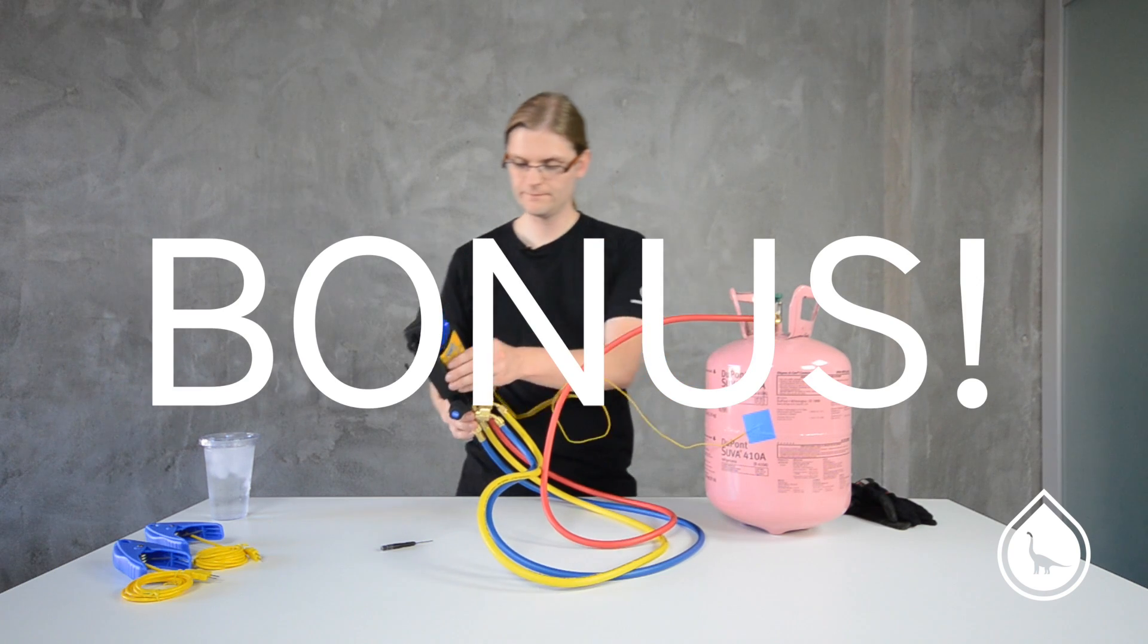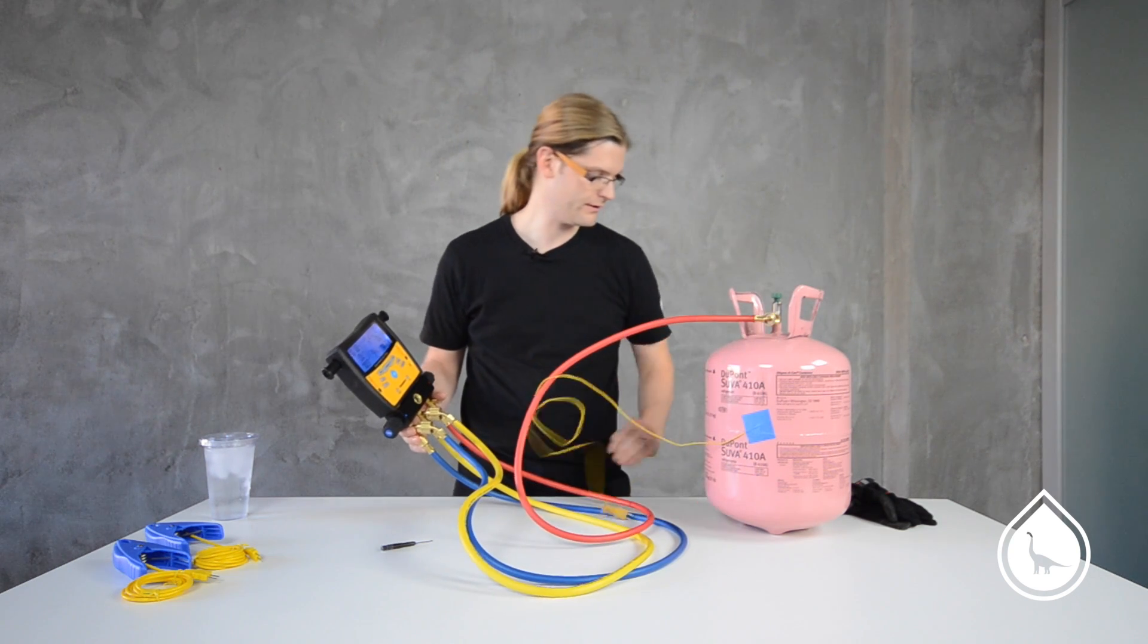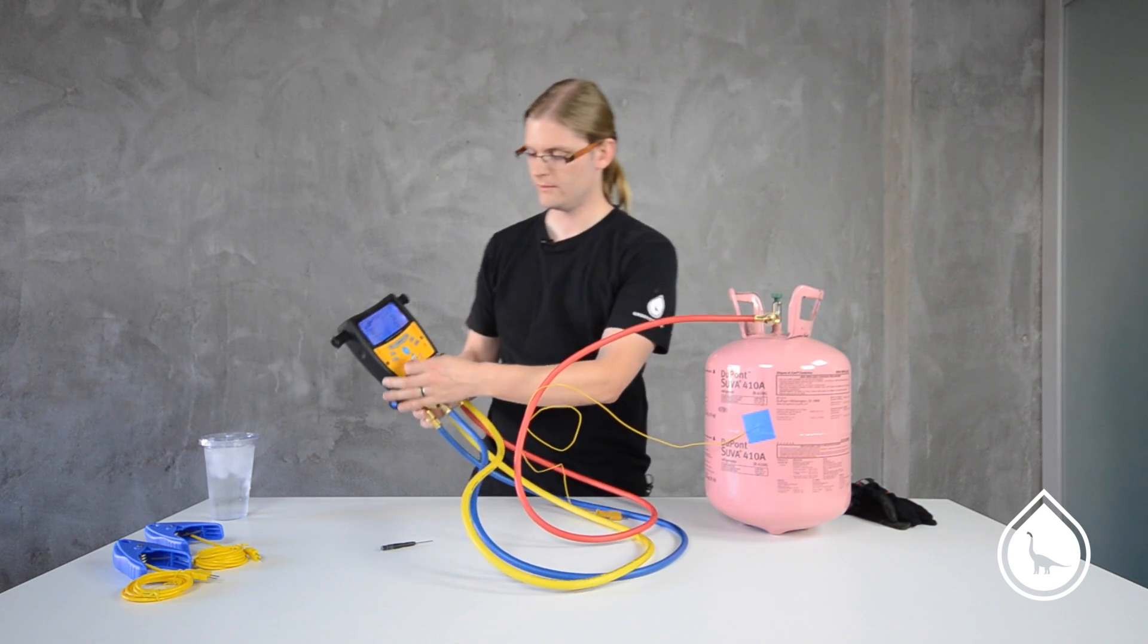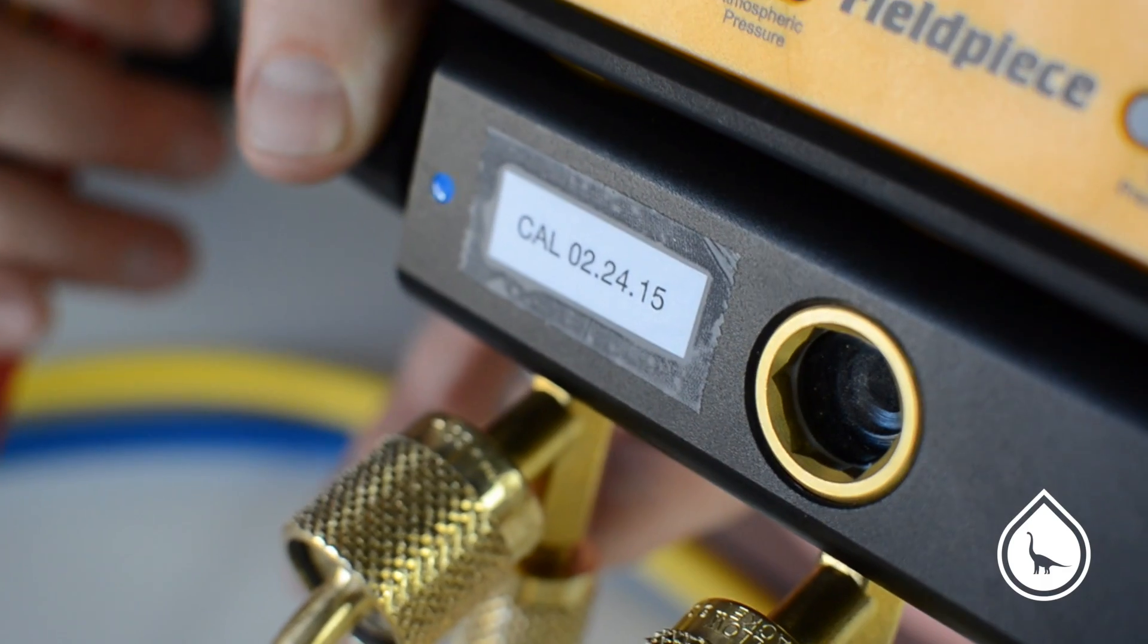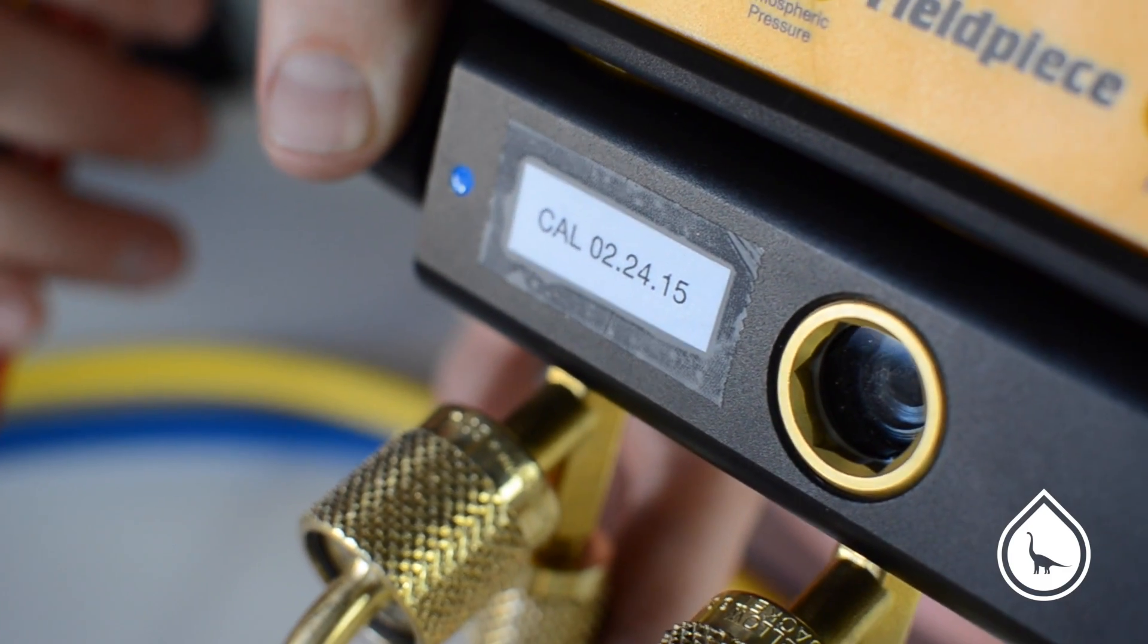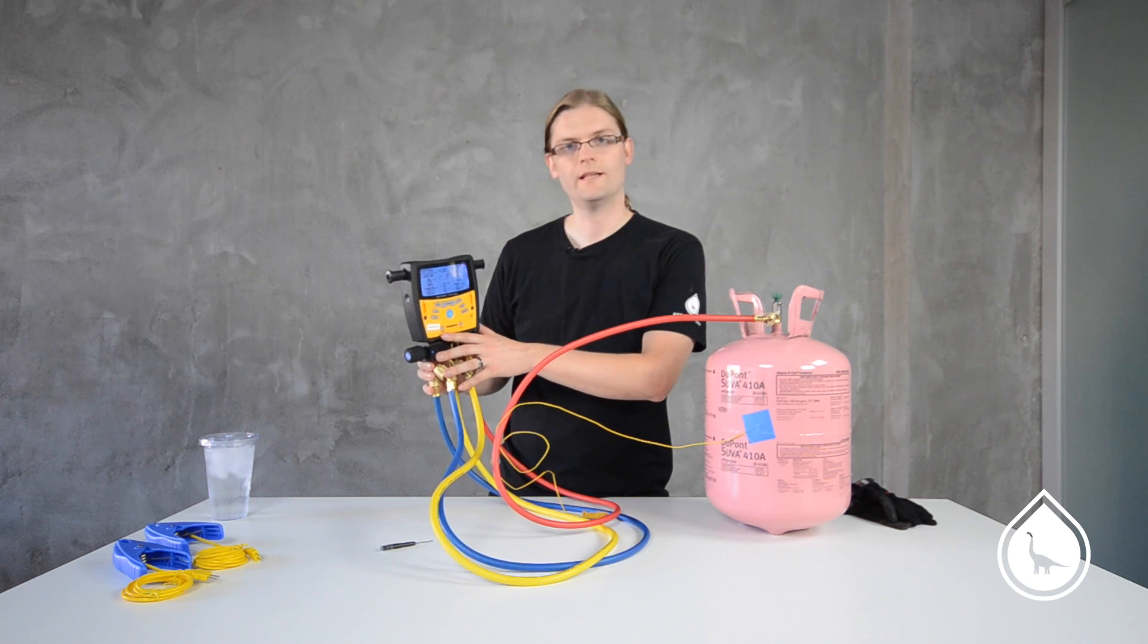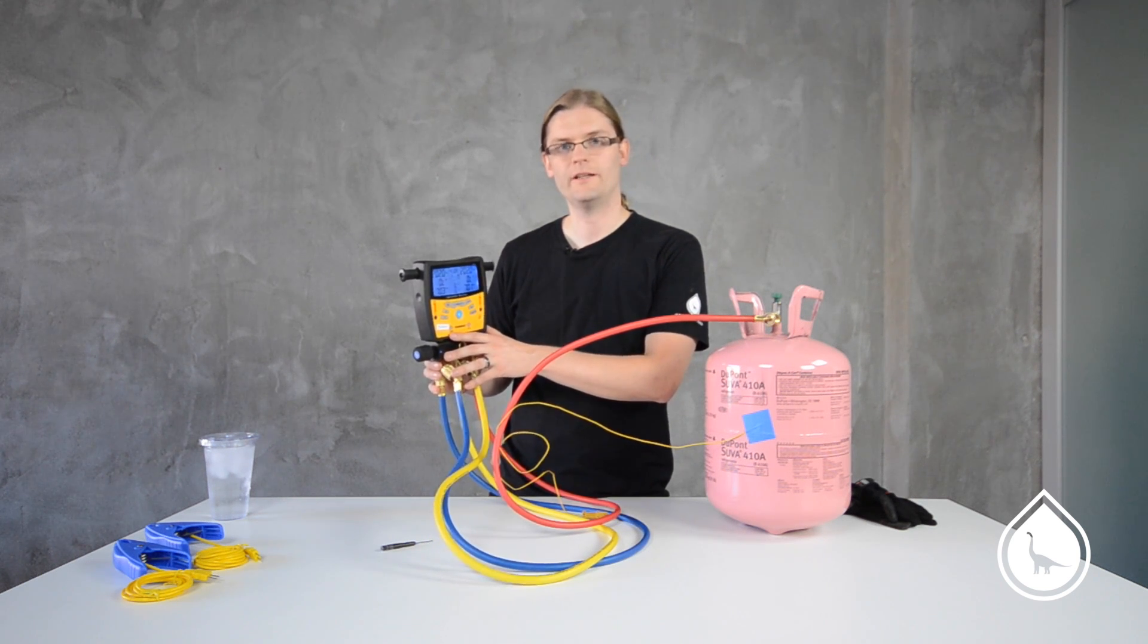One last little tidbit for you here at Green Dinosaur, any time we calibrate our equipment, we add a sticker right onto the front of our gauge. So when we're out using it and taking pictures of our service calls, we know exactly the last time that these gauges were calibrated. I'm Shane Hanson in the field for Green Dinosaur.